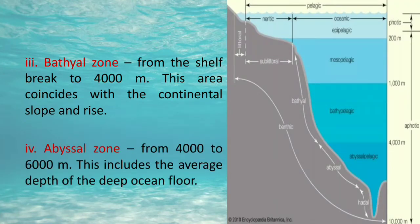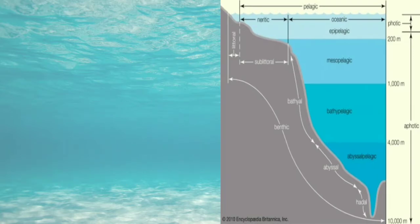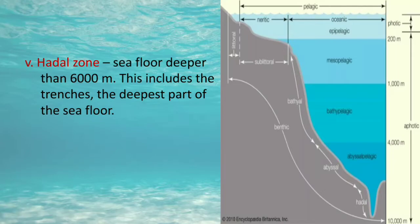The fourth zone is the abyssal zone, from 4,000 to 6,000 meters depth. This includes the average depth of the deep ocean floor. The fifth and last zone is the hadal zone, which covers seafloor deeper than 6,000 meters. This includes ocean trenches, which are the deepest parts of the seafloor.